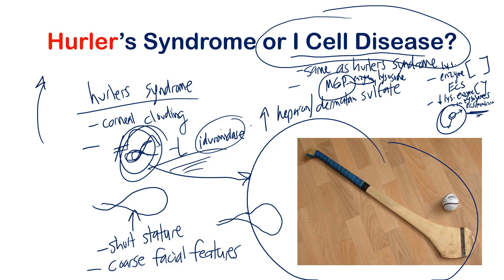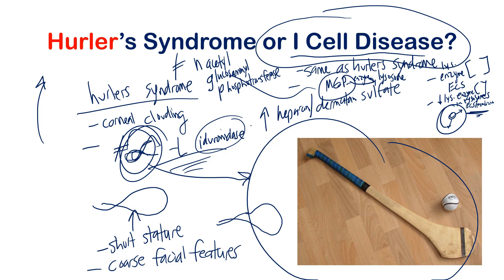Going further, the specific enzyme that is defective in I-cell disease is N-acetylglucosamine phosphotransferase. This enzyme is responsible for adding mannose-6-phosphate to lysosomal enzymes at the Golgi. When it's defective, mannose-6-phosphate cannot tag the enzymes, so they cannot be directed into the lysosome and are instead excreted into the extracellular space.